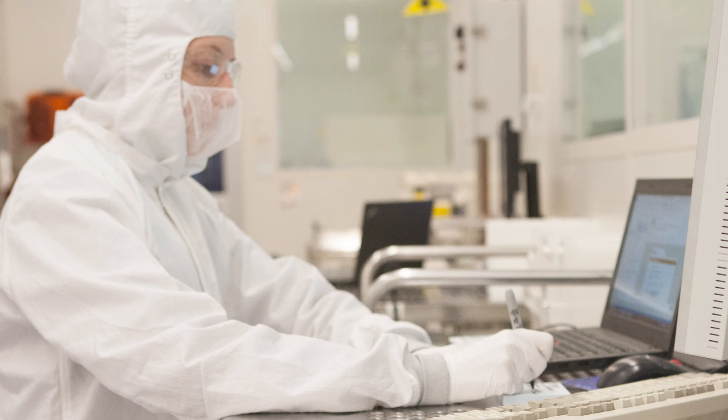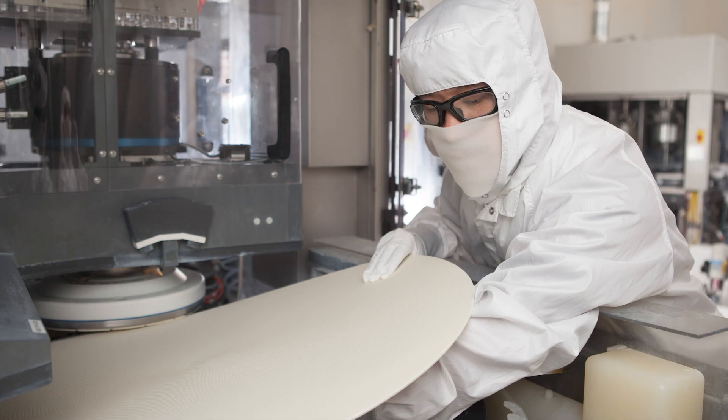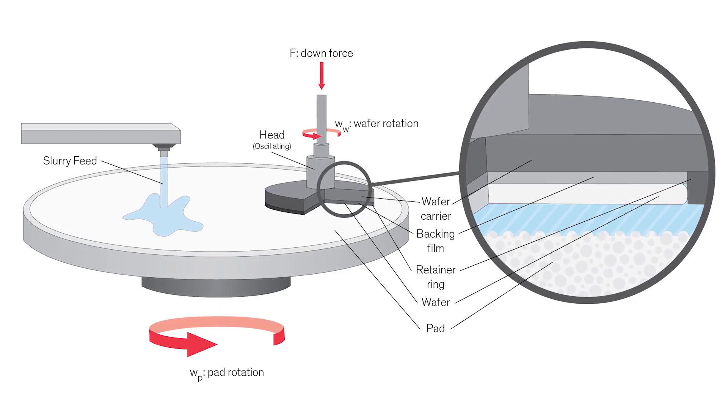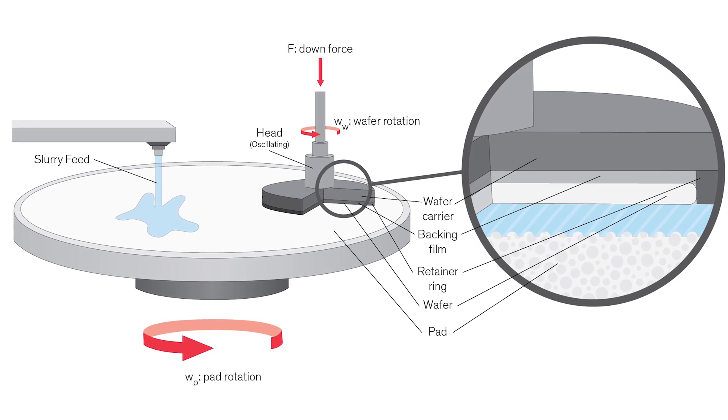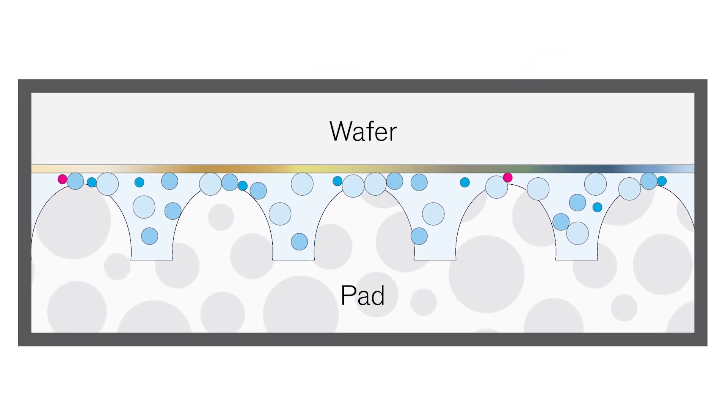A critical element of semiconductor fabrication is a process called Chemical Mechanical Planarization, or CMP, which combines chemical and mechanical forces to achieve precise uniformity at each layer of a wafer and ensure optimal function of integrated circuits.